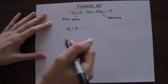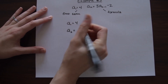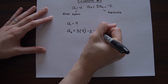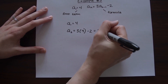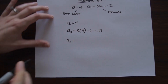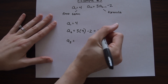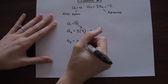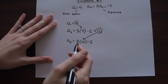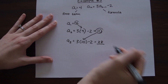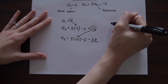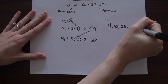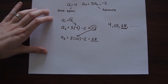The first term is four. To find the second term we plug four into our formula: three times four minus two, which is 12 minus two equals 10. For the third term, we plug 10 in: three times ten minus two equals 30 minus two, which is 28. That's our answer. The sequence we made is 4, 10, 28 — we just wanted the third term, so that's where we stop.